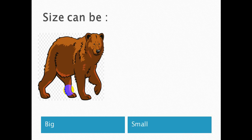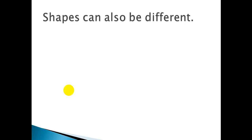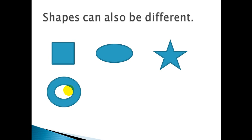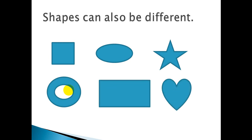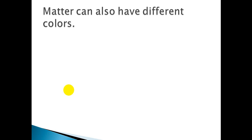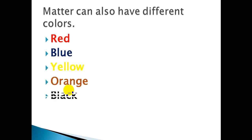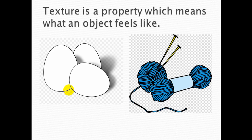So one property of matter is size, which could be big or small. Another property is shape. When you look around yourself, you will find things with different shapes — square, oval, star, round, rectangle, heart, or any other shape. Matter can also have different colors: red, blue, yellow, orange, black, pink, purple, brown, or any other color. So color is one property of matter.